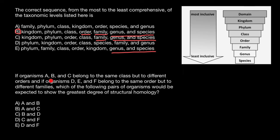Here is another question. If organisms A, B, and C belong to the same class but to different orders, and if organisms D, E, and F belong to the same order but different families, which of the following pairs of organisms would be expected to show the greatest degree of structural homology?